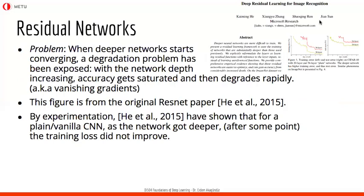Let's start with residual nets. In 2012 we had AlexNet, which was revolutionary. Then people started working on deeper networks — VGG was one, GoogLeNet was another. VGG was deeper than AlexNet and better, same as GoogLeNet. The guys working on this realized something: AlexNet is 2012, VGG is 2014, and ResNet is 2015.